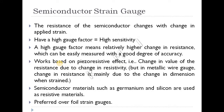The next type is the semiconductor strain gauge. Semiconductors are used in this gauge, which has a high sensitivity gauge factor. The resistance of the semiconductor changes with the change in applied strain. A high gauge factor means a relatively higher change in resistance, which can be easily measured with a good degree of accuracy.